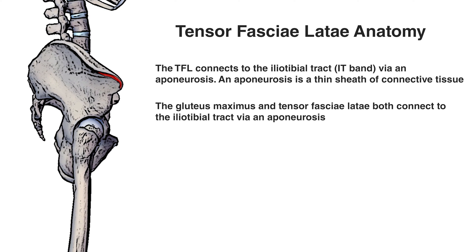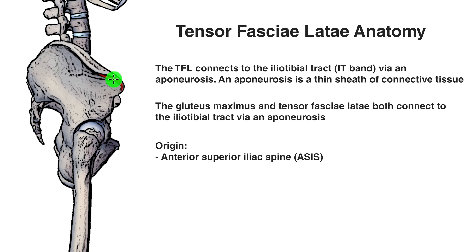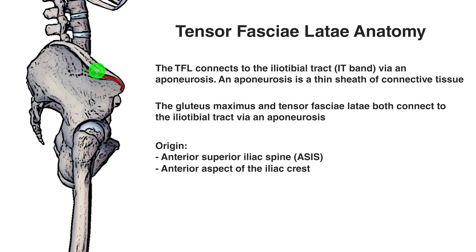Let's take a look at the origin next. You can see that marked out here in red. The TFL originates from the anterior superior iliac spine, which is this bony projection on the front of the hip here. The origin then continues towards the posterior of the body and crosses onto the anterior aspect of the iliac crest. The iliac crest is a ridge that runs along the top of the hip, and the anterior aspect is towards the front of the hip.